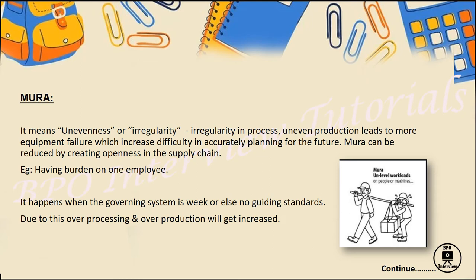This happens when the governing system is weak or no proper guidelines are provided. Make sure Mura, which means unevenness or irregularity, is addressed. Always maintain a proper supply chain — every employee should be considered at an equal level, should get proper training, and be aware of all concepts so that a process will move smoothly.